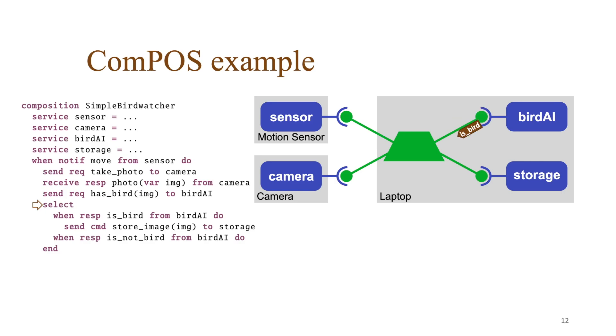The composition receives an is bird message that matches with one of the whens. It executes the when's body that sends the store image message to the storage service with the image as parameter. The reaction has now finished its execution and is removed.